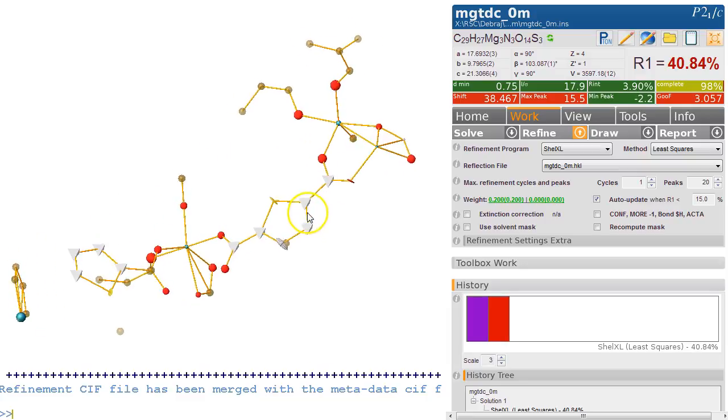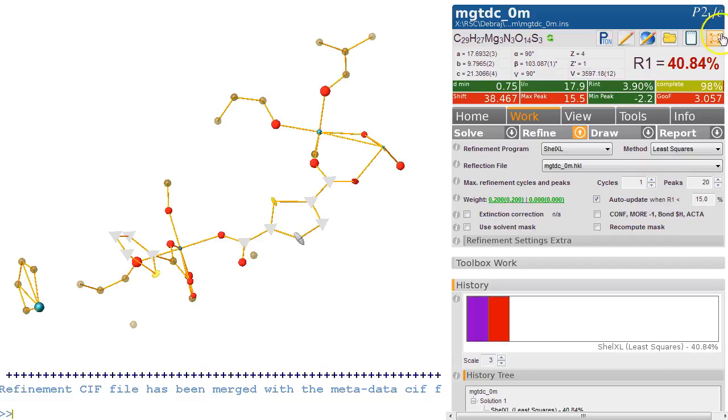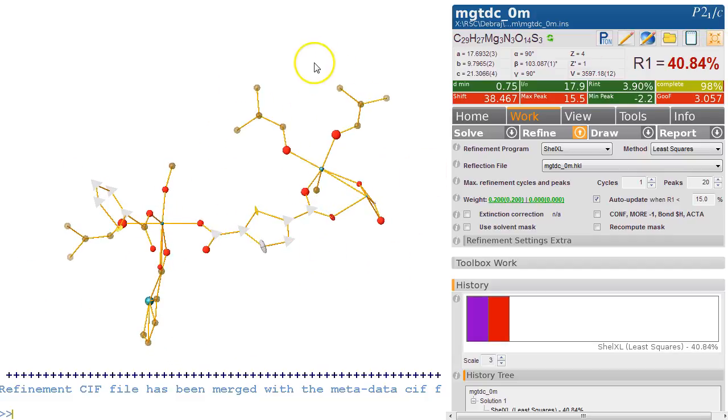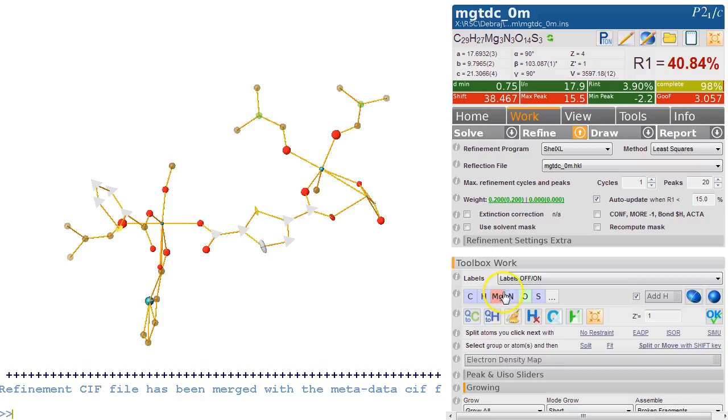This is clearly an interesting case where only half the structure is actually present here. These ones look very much like DMF, so I'll select them and make them into nitrogen.